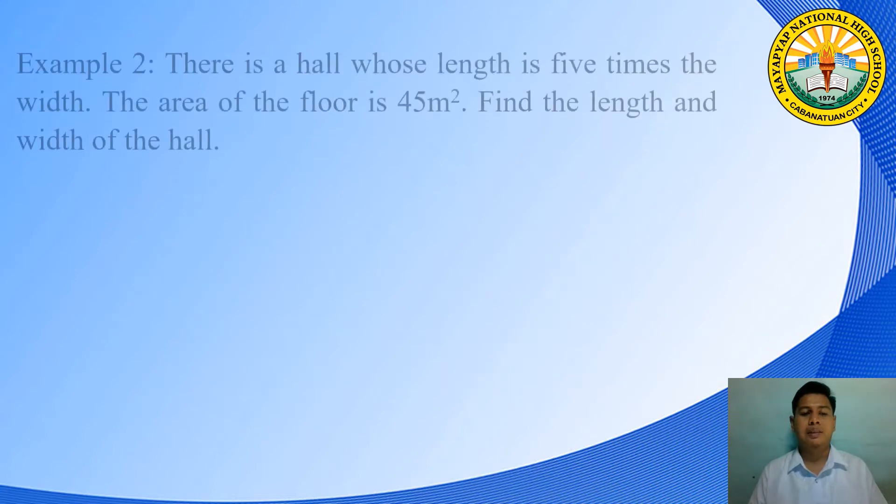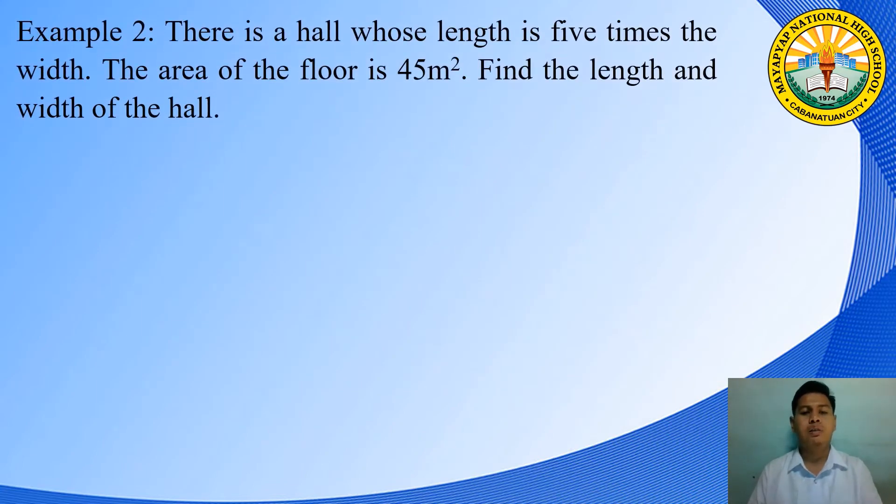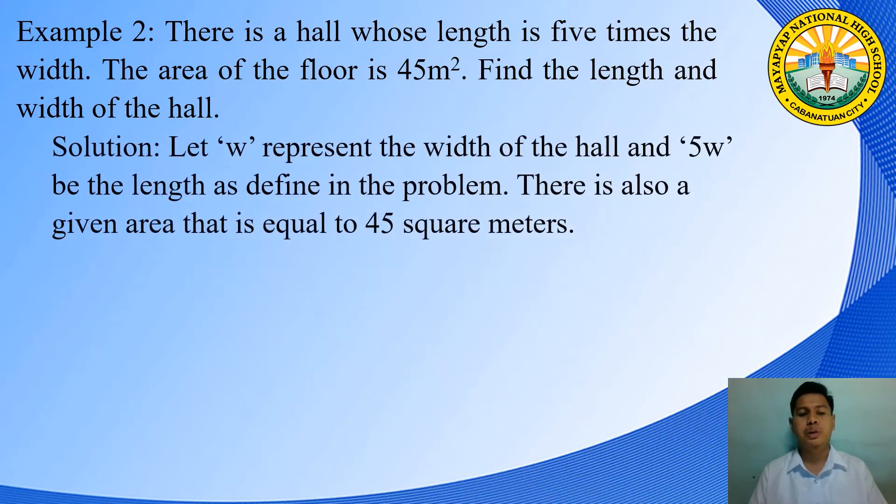Next example, there is a hall whose length is 5 times the width. The area of the floor is 45 square meters. Find the length and width of the hall. Solution, let W represent the width of the hall and 5W be the length as defined in the problem. There is also a given area that is equal to 45 square meters.